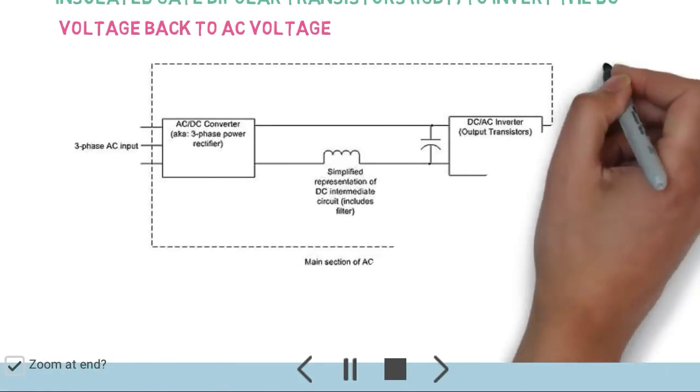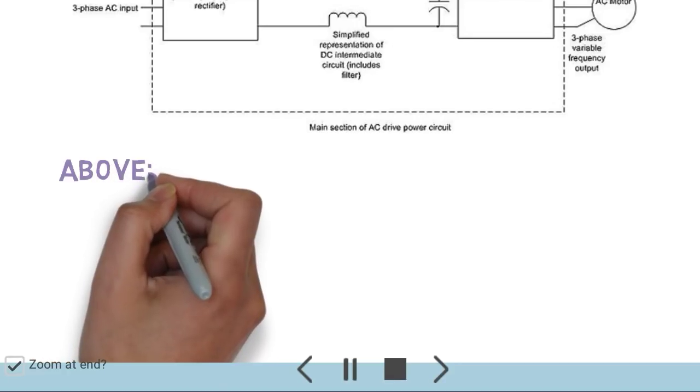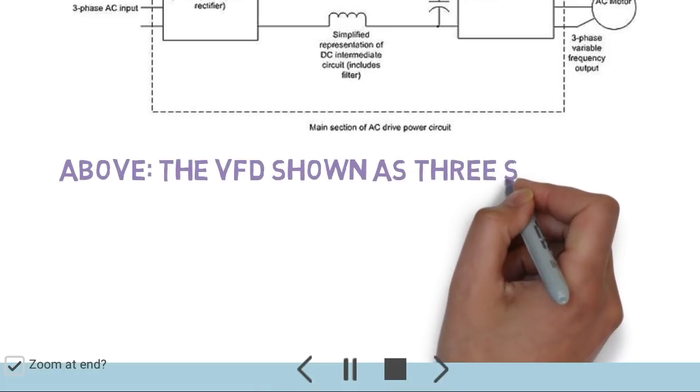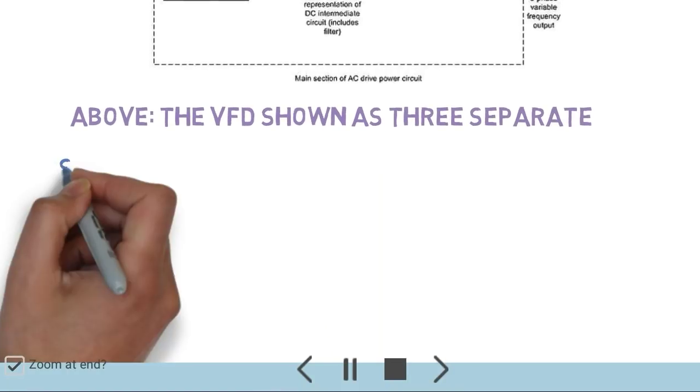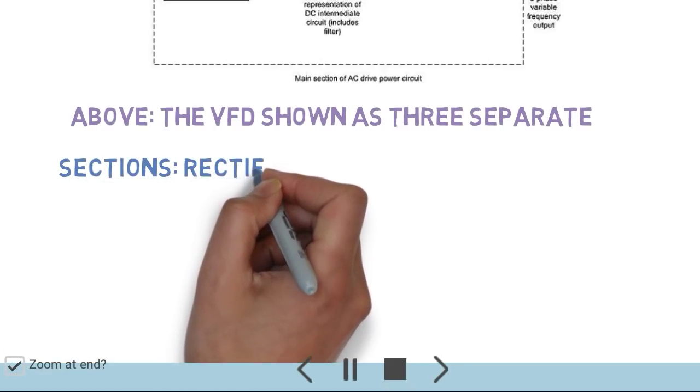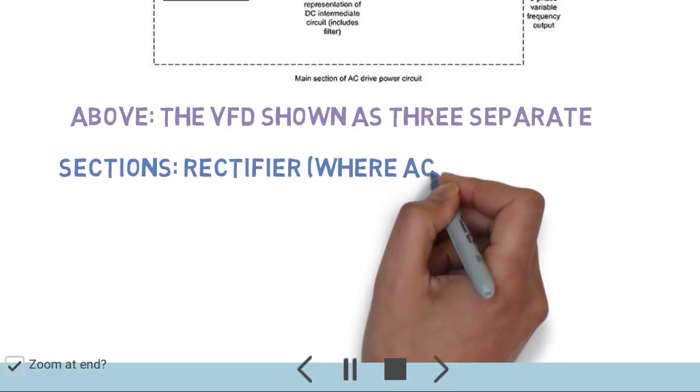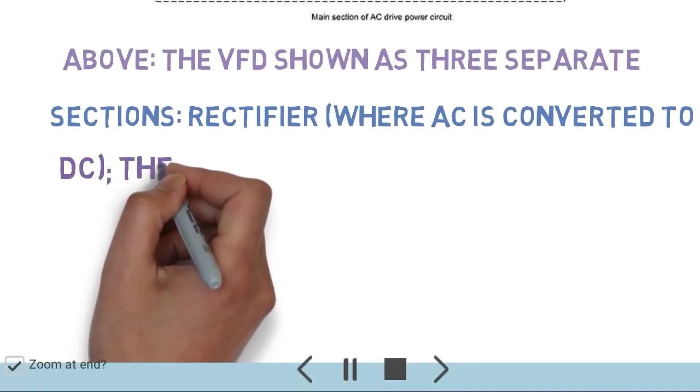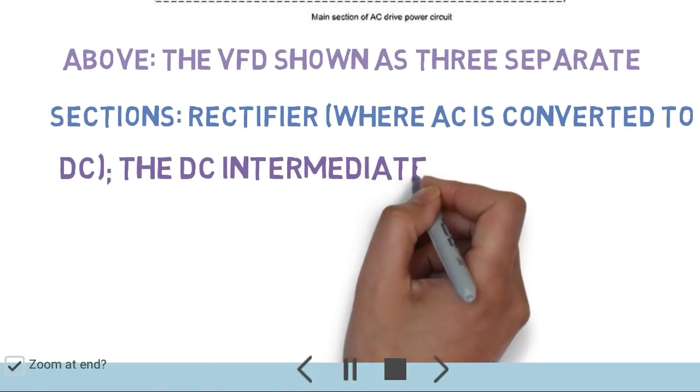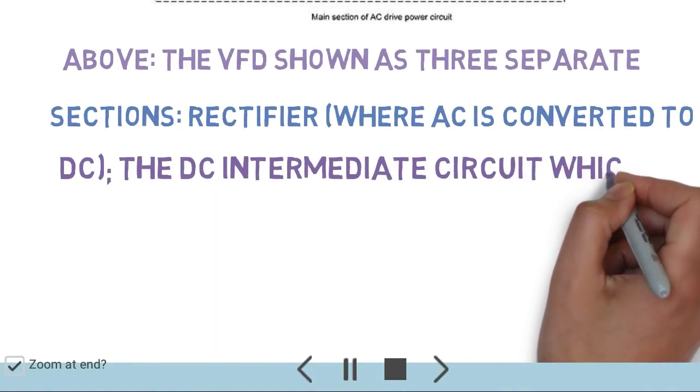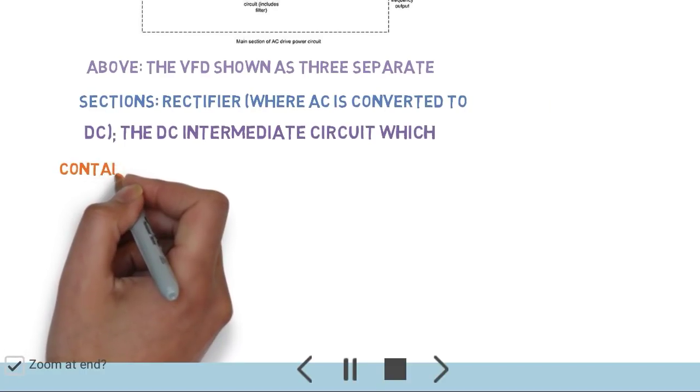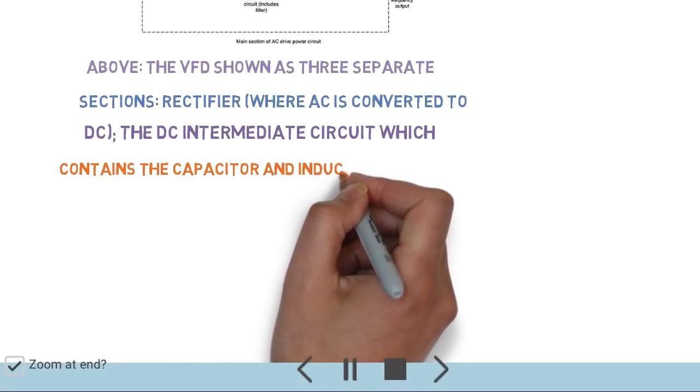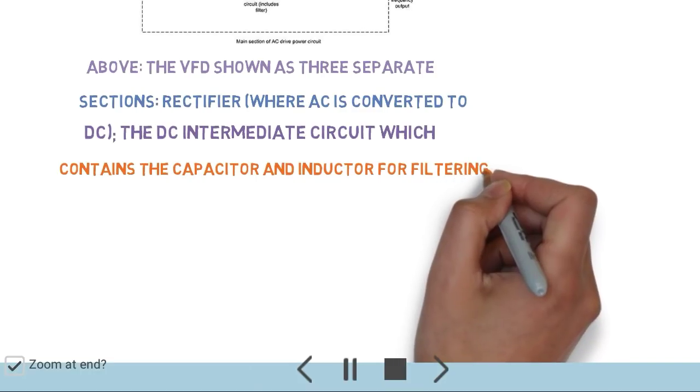This is the block diagram. There are three separate sections. First is the rectifier where AC is converted into DC, then the DC intermediate circuit which contains capacitors and inductors for filter.